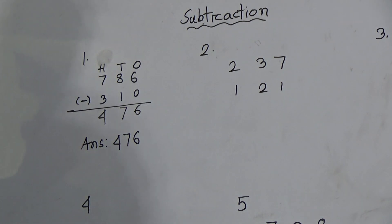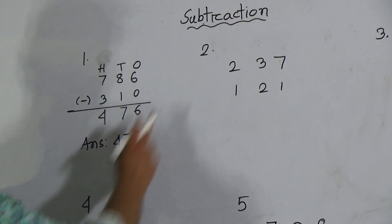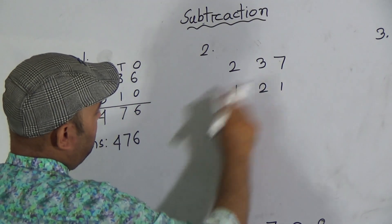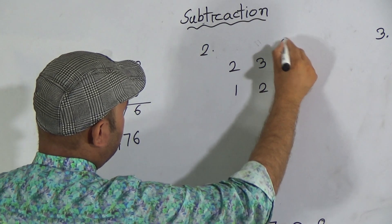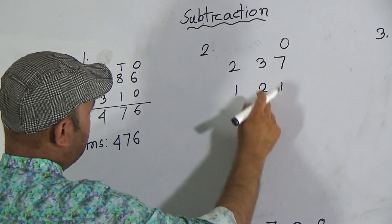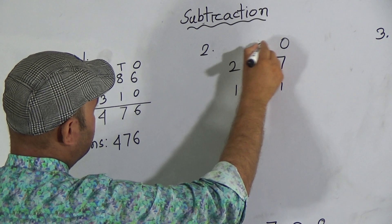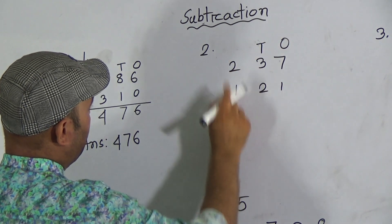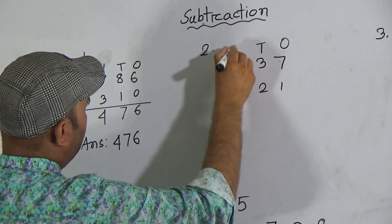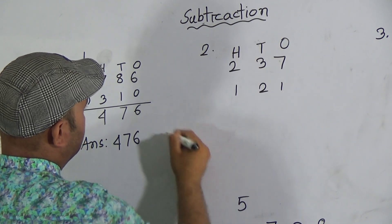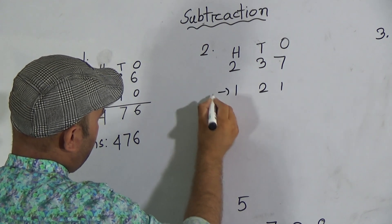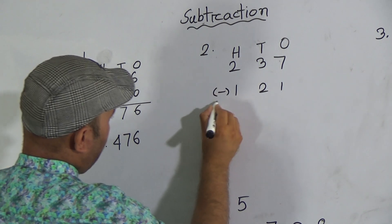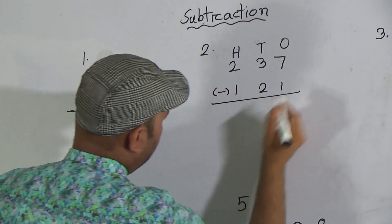Now here is question number two. Seven and one is the ones place digit, three and two is the tens place digit, two and one is the hundreds place digit. We have to use the subtraction sign here and draw a line to bring down the answer.